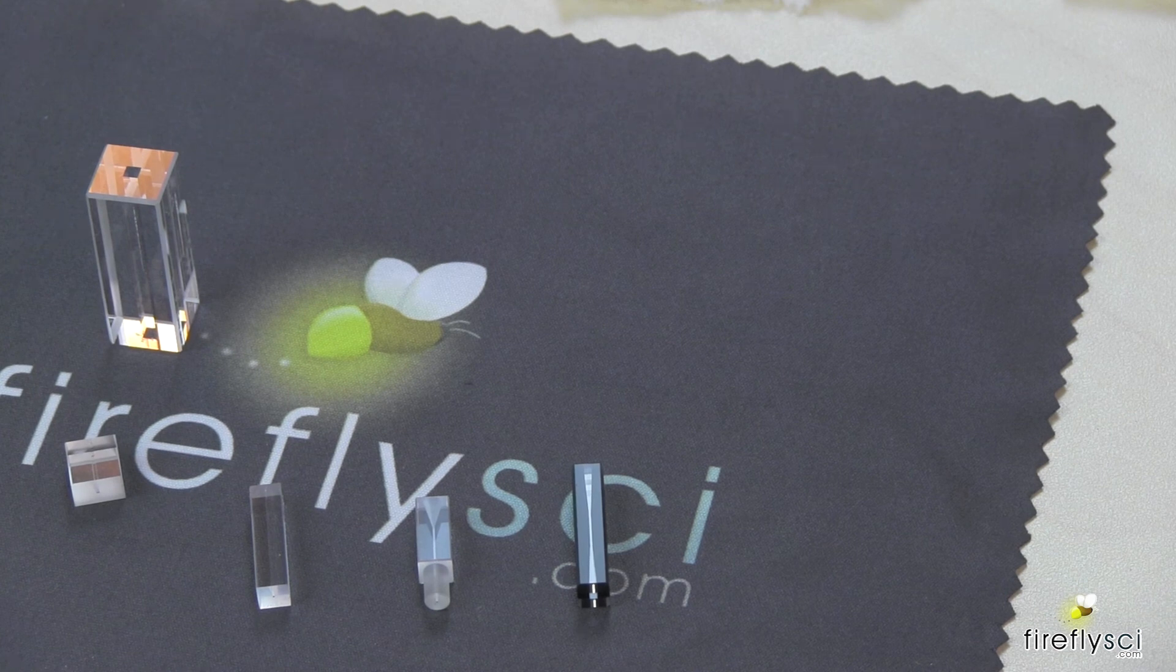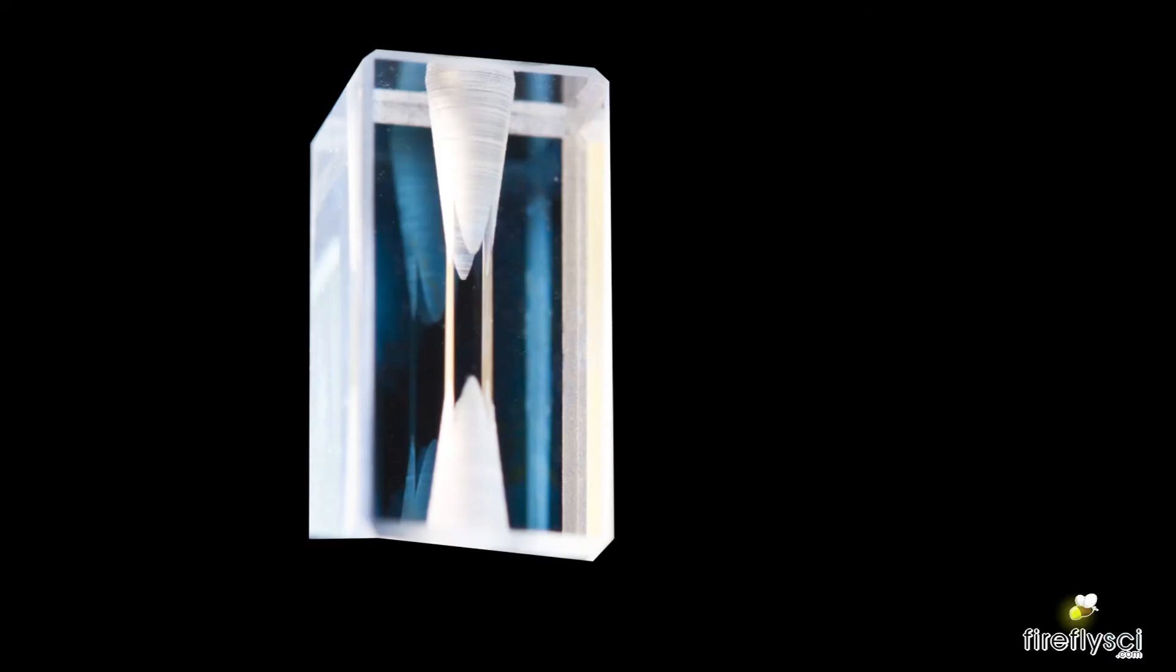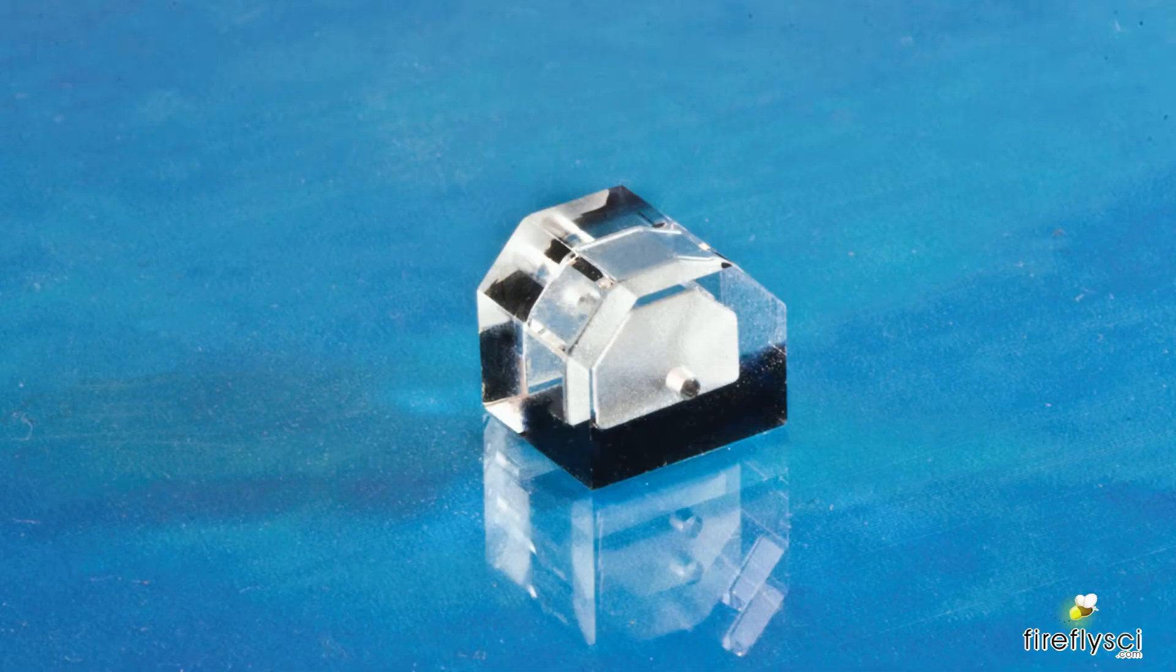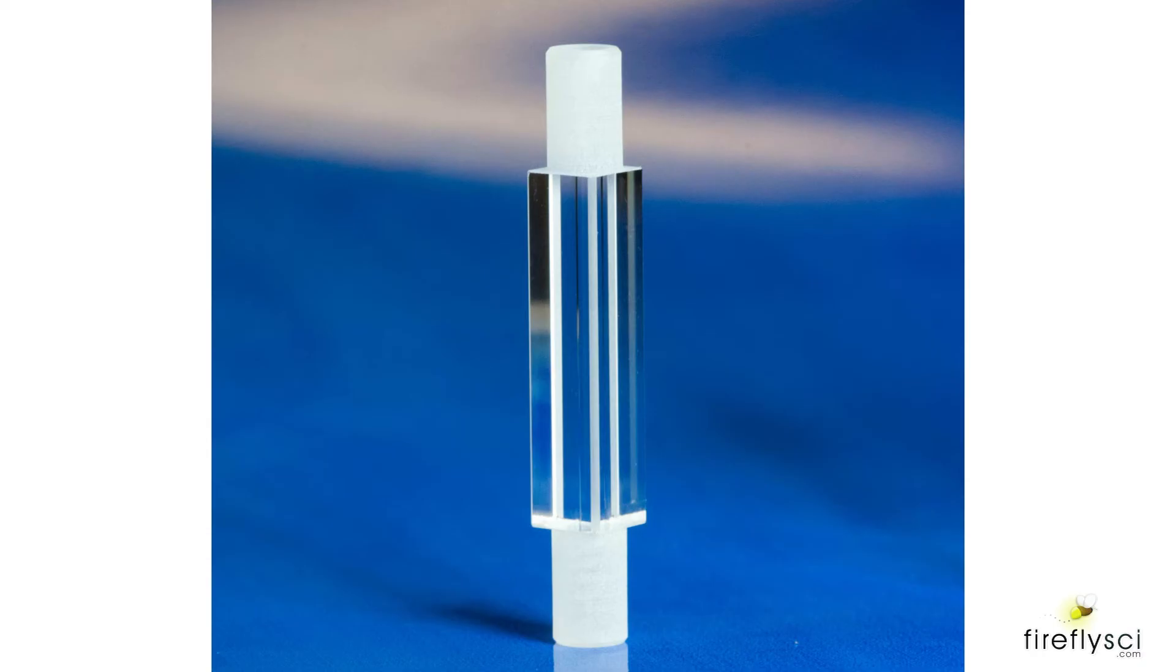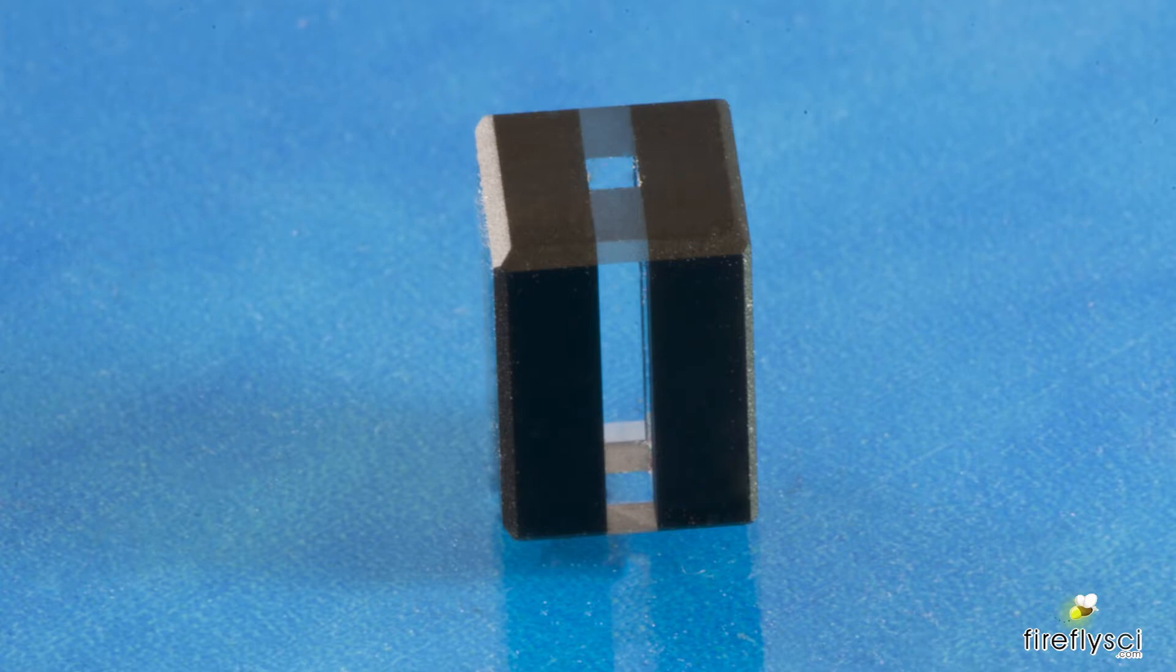So modifications we can make to flow cells are inlet cones, inlet and outlet cones, custom shapes, beveled edges, rounded ends for easy tubing hookup, and designs with clear and black quartz.